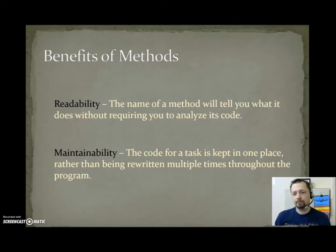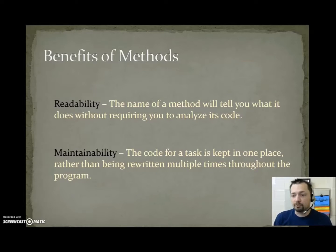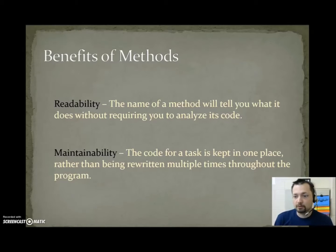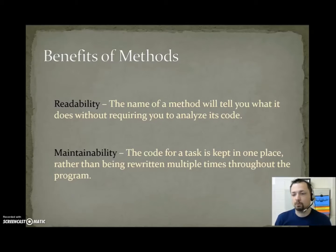Maintainability. The code for a task is kept in one place rather than being written multiple times throughout the program. Going back to the square root example, if we actually knew all the lines involved with doing a square root and we wrote those 10 lines every time we needed it, the program would still function the same. But if we had made a mistake in that code, we would have to go fix it in 10 different places. But by saying math.sqrt, if we knew the square roots weren't working, we go to one place, fix the code in the sqrt method, and then it fixes in all other 10 places because they reference one location of code.